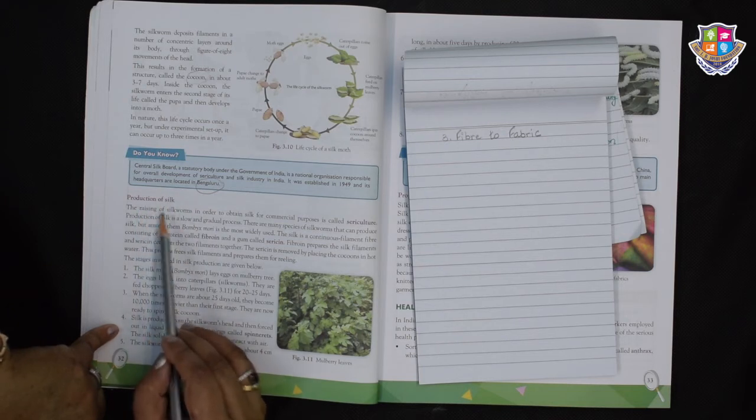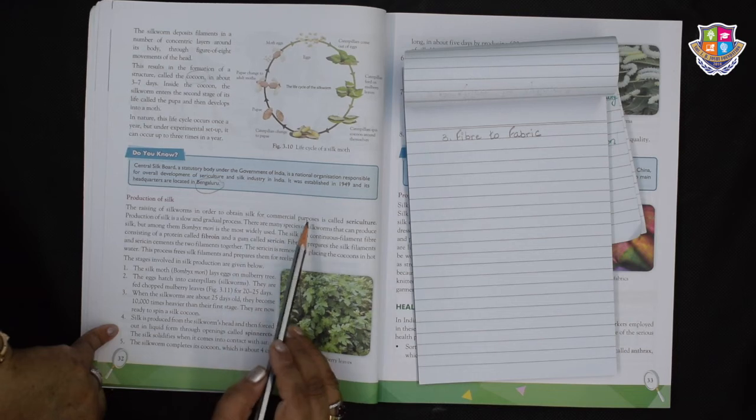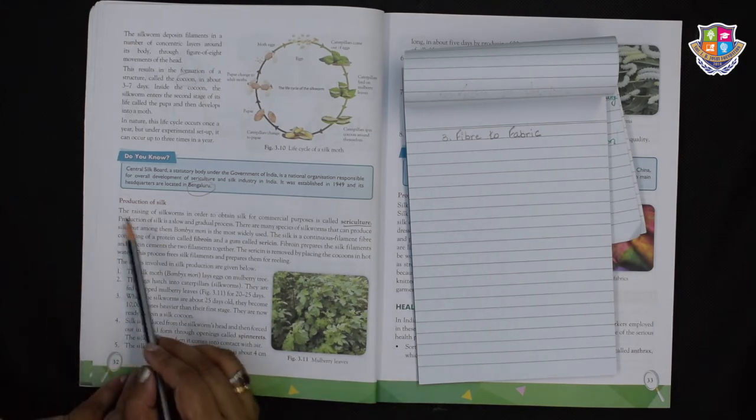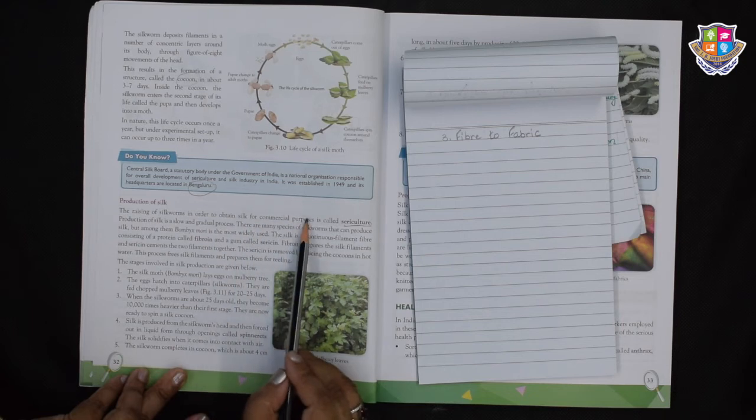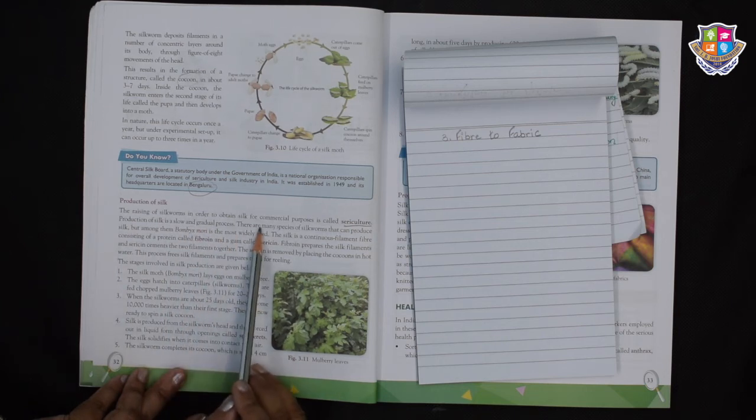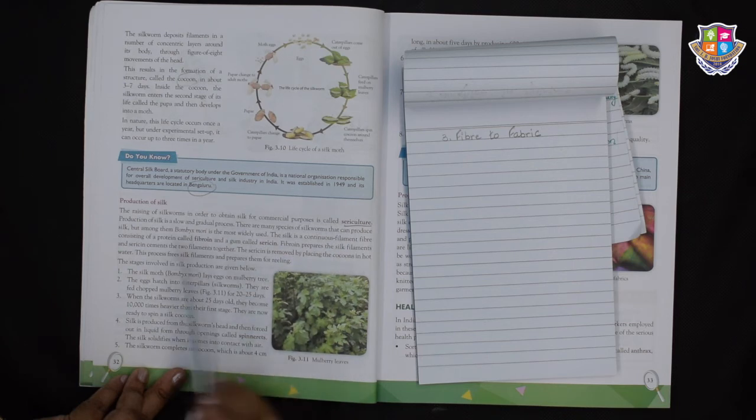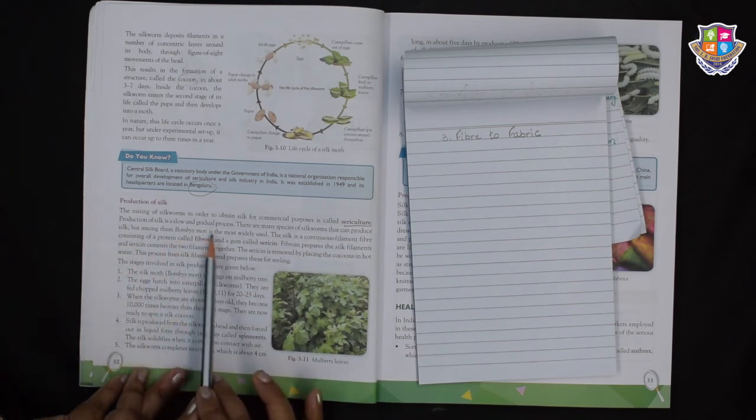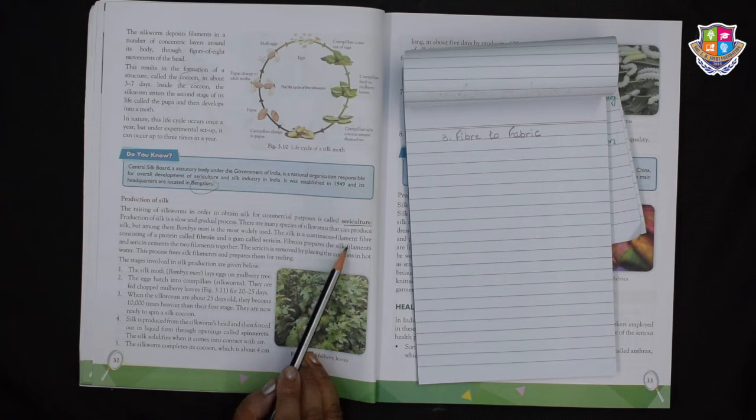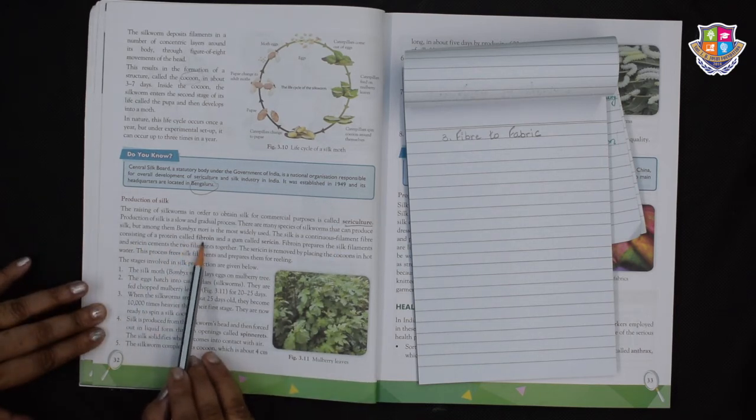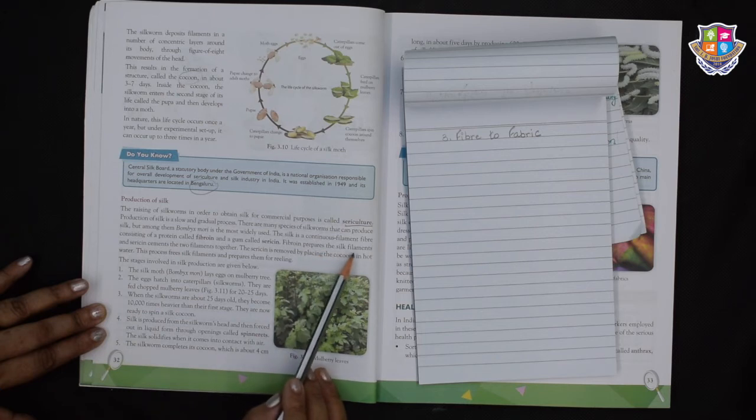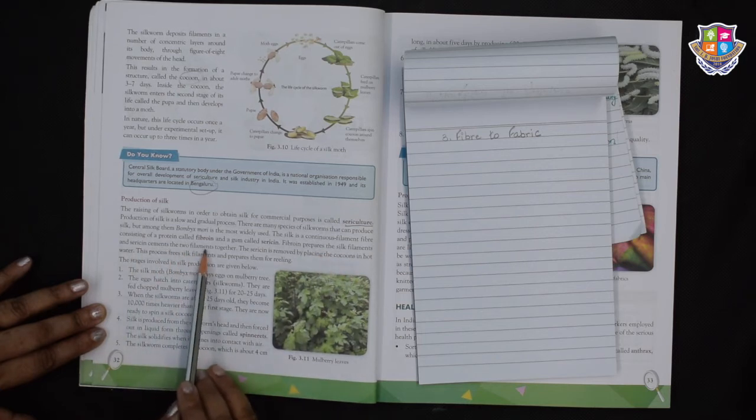Now production of silk. The raising of silkworms in order to obtain silk for commercial purposes is called sericulture. Production of silk is a slow and gradual process. There are many species of silkworms that can produce silk but among them Bombyx mori is the most widely used. The silk is a continuous filament fiber consisting of a protein called fibroin and a gum called sericin. Fibroin prepares the silk filaments and sericin cements the two filaments together.